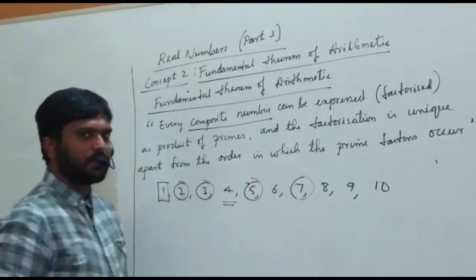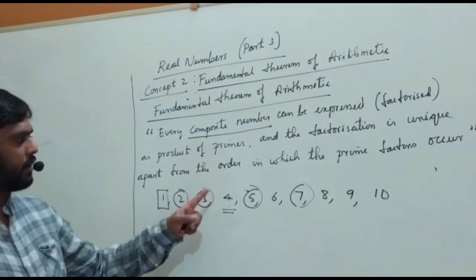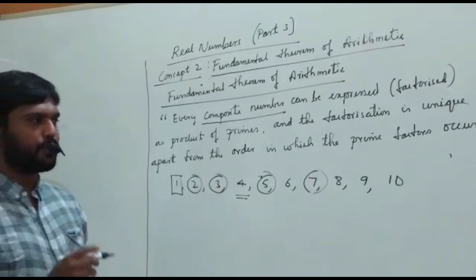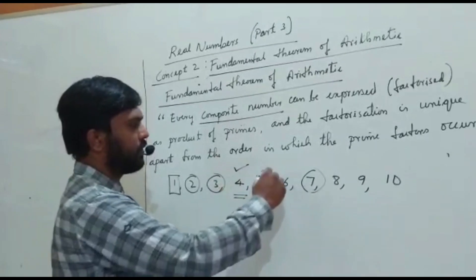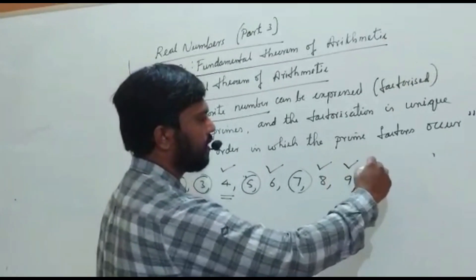The numbers which have factors other than 1 and itself, that is a composite number. So the composite numbers are 4, 6, 8, 9, 10.